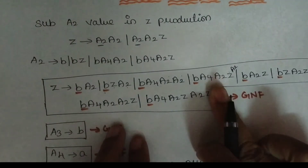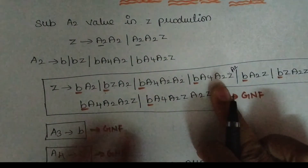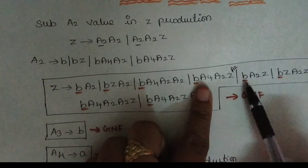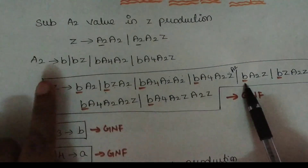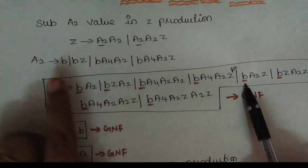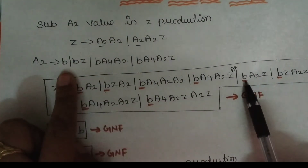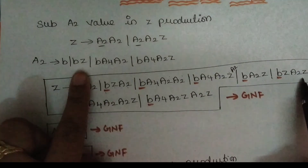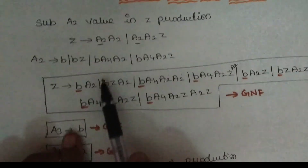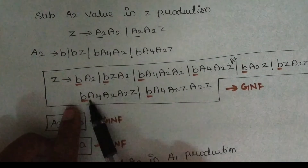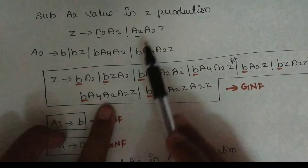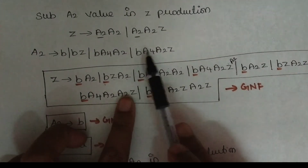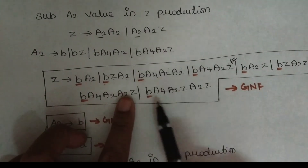Substitute B and B — remaining values are added, and BZ substitutes for remaining values. B, A4, A2 — the second value is added. B, A4, A2, AZ are added.